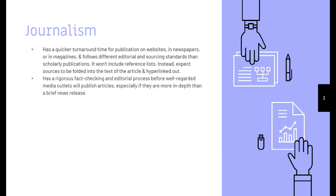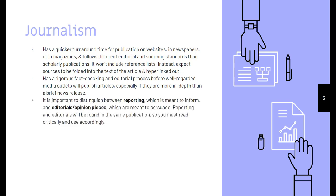Journalism has a very rigorous fact checking and editorial process, especially before well-regarded media outlets publish articles, especially if they're more in-depth than just a brief news release. It's important to distinguish between reporting, which is meant to inform, and editorials or opinion pieces, which are meant to persuade. Reporting and editorials will be found in the same publication, and you have to read critically and use them accordingly.